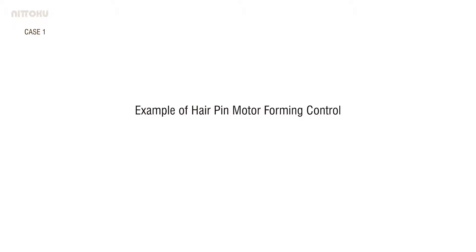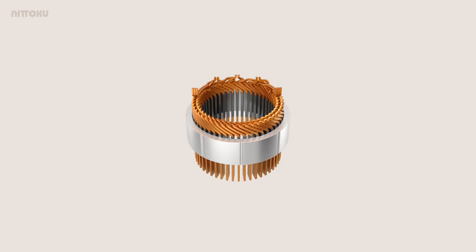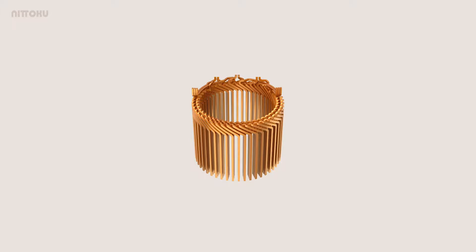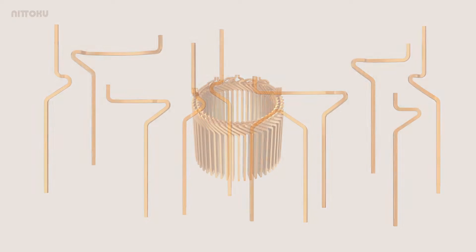Here are some examples of the use of RFID tags. This is an example of a hairpin motor in a forming process, which is one of the EV/HEV motor construction methods.